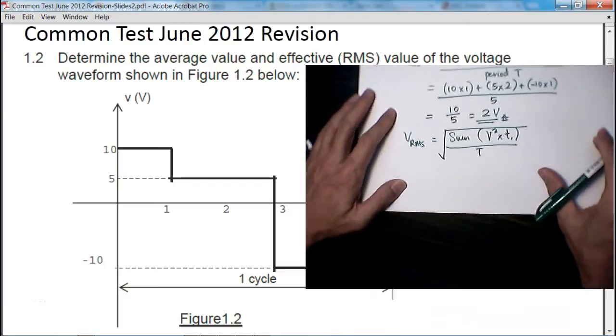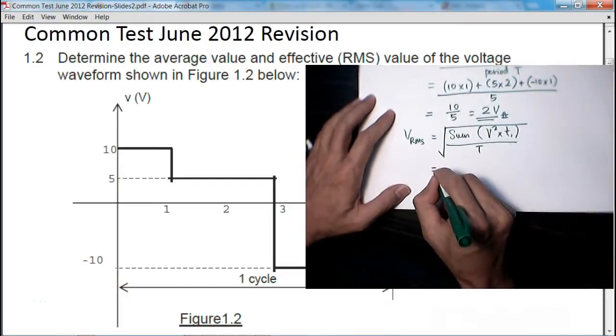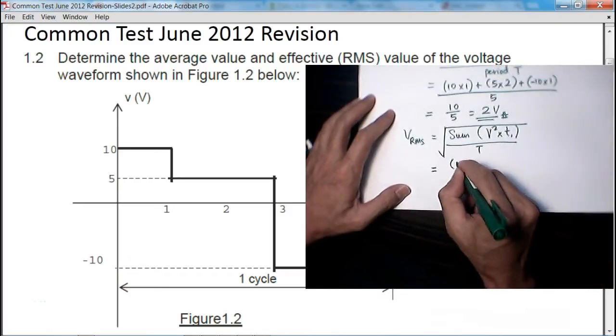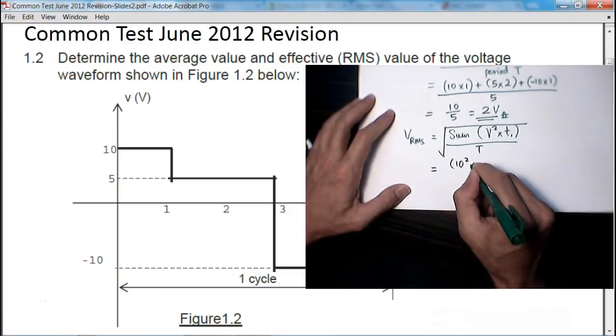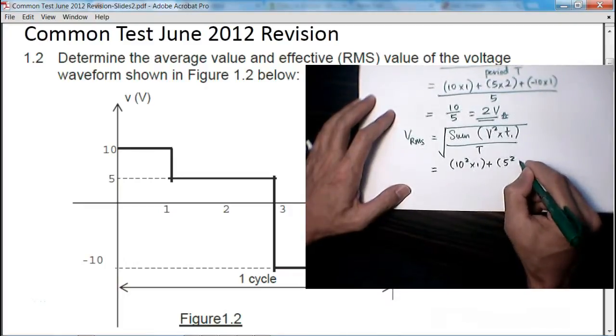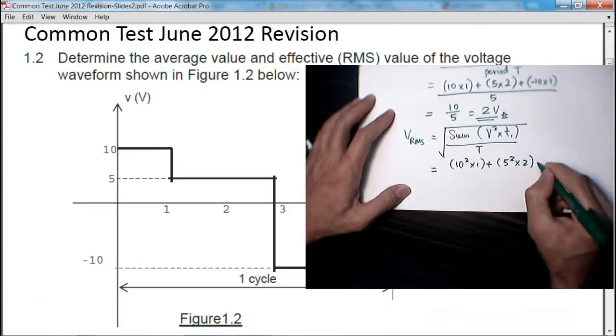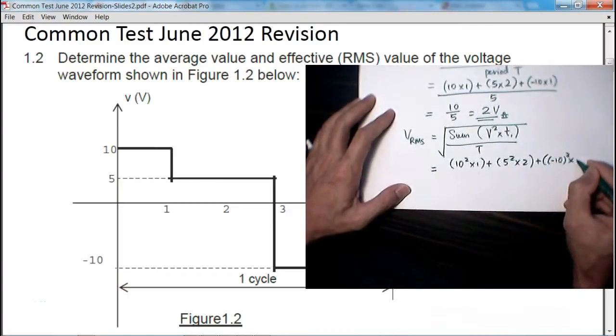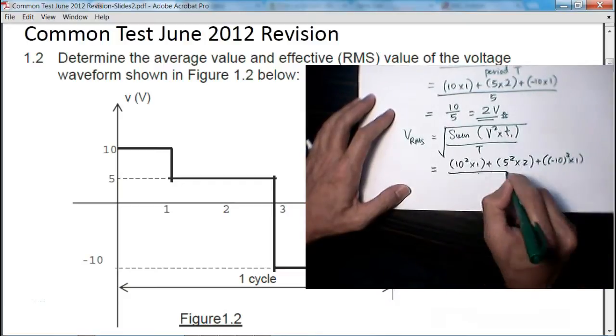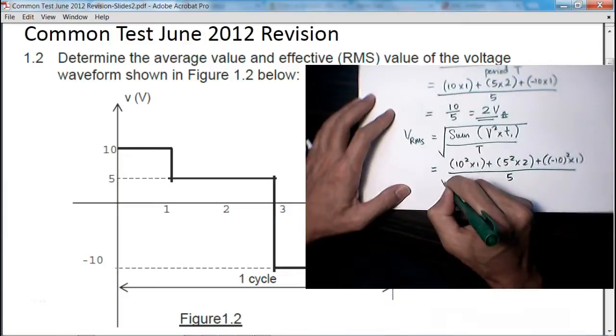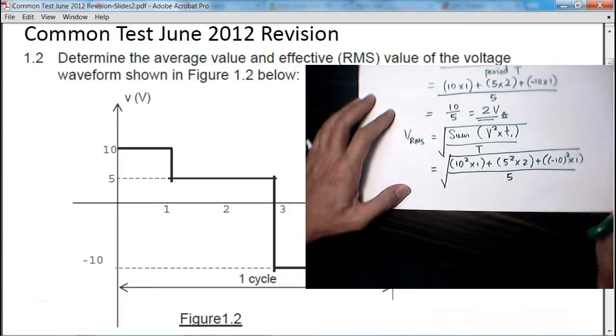So in this case, for the first portion I have 10 squared times 1 plus 5 squared times 2 plus minus 10 squared times 1, the whole thing divided by the cycle duration 5, then square root.